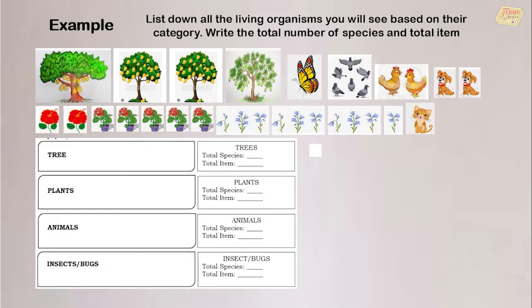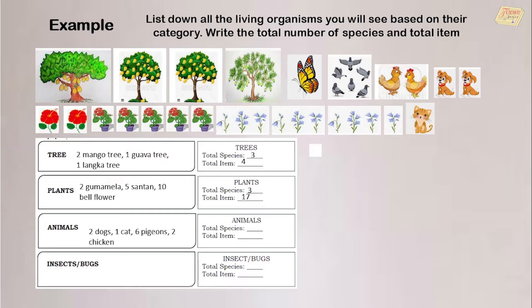Let's have an example. List down all the living organisms you see based on their category and write the total number of species and total items. We can see three types of trees: two mango trees, one guava tree, and one langka tree. Therefore, the total species are three and the total items are four. For plants, we have two gumamela, five santan, and ten bellflower — total species: three, total items: 17. For animals, we have two dogs, one cat, six pigeons, and two chickens — total species: four, total items: 11.